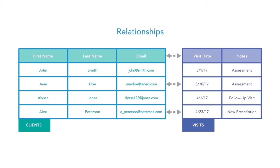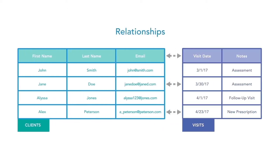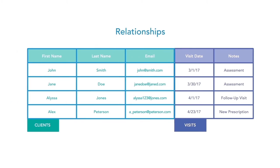A relationship connects two tables, allowing the tables to reference data from each other. For example, a visit table could show the name and email address of the related client from the client table.